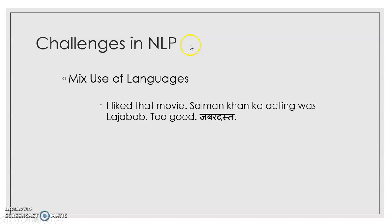One of the biggest challenges in natural language processing is the mixed usage of language. For example, a movie comment might read: 'I like that movie. Salman Khan ka acting was La Jabab. Too good, jabardast.' Here English, Hindi, and Hindi written in English script are all combined. We do this with multiple languages — typing one language in another. Handling this code-mixing is also a challenge in NLP.